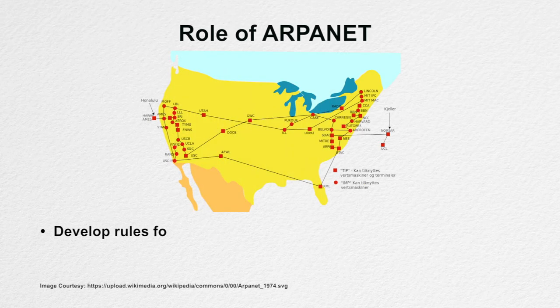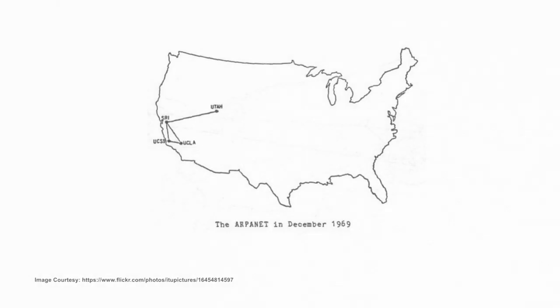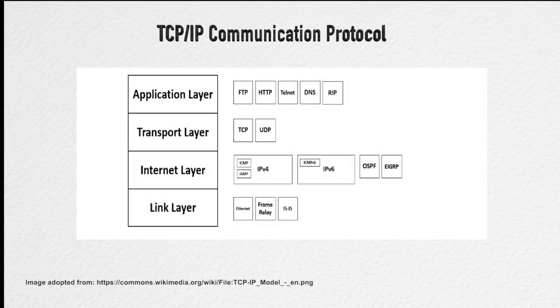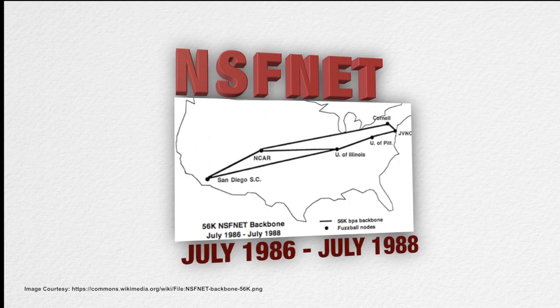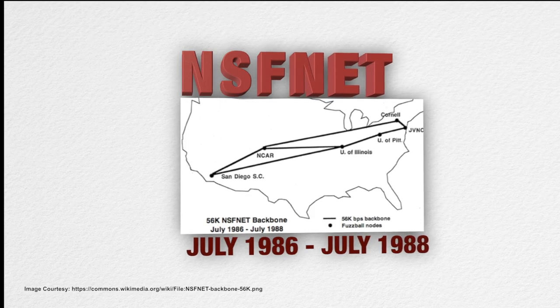The major task that ARPANET had to play was to develop rules for communication — that is, protocols for communicating over ARPANET. ARPANET in particular led to the development of protocols for internetworking, in which multiple separate networks could be joined into a network of networks. This resulted in the development of the TCP/IP protocol suite, which specifies the rules for joining and communicating over ARPANET. Soon after, in 1986, the NSF or National Science Foundation backbone was created and five US university computing centers were connected to form NSFNET.